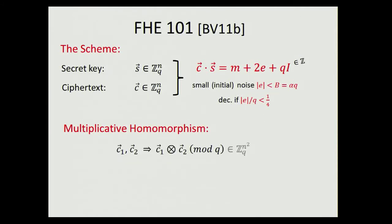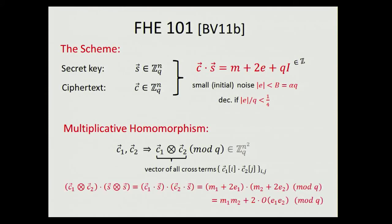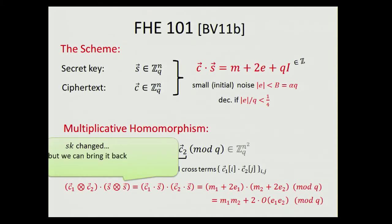Multiplicative homomorphism is done using the tensor product. We take the tensor product of C₁ and C₂ mod Q, producing a vector of dimension N² containing all cross terms. This long vector encrypts M₁·M₂. When you decrypt this tensor ciphertext using the tensor secret key S⊗S, you get M₁·M₂. Getting back to the original secret key from this longer one is a solved problem shown in the BV paper.